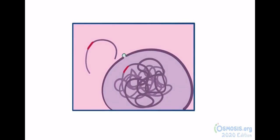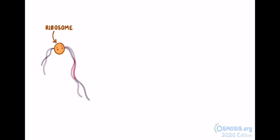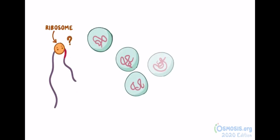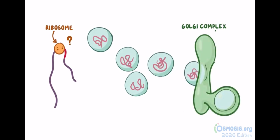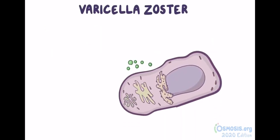The viral genes are transcribed into RNA and go over to the ribosome, where they are translated into capsid proteins. The capsid and viral DNA fuse together. They go through the Golgi complex, a cell organelle in charge of packing proteins, to get their lipid membrane, and finally, the newly formed viruses leave the cell, leaving behind a dead cell.